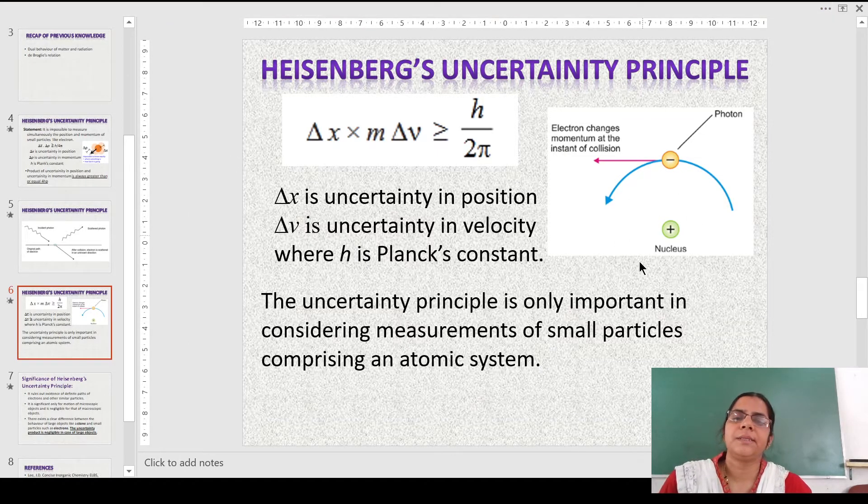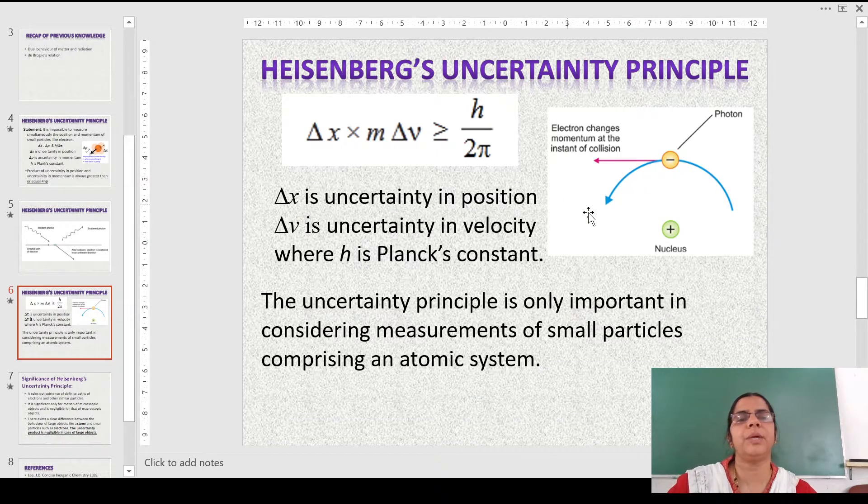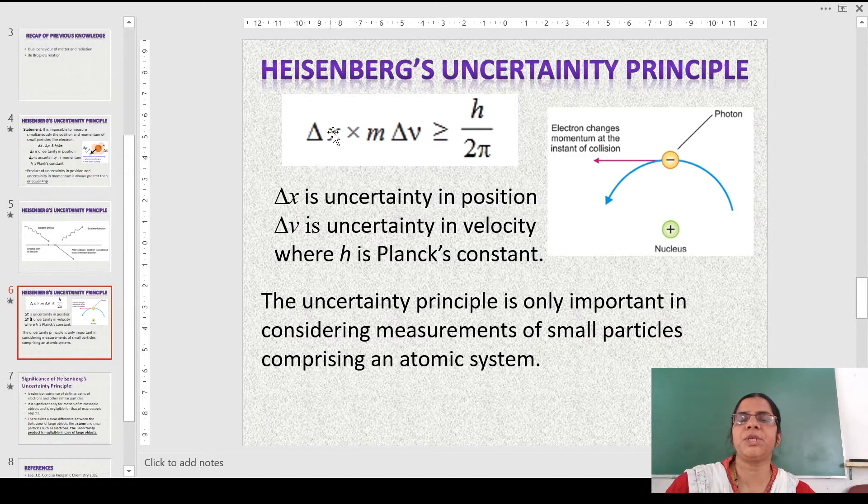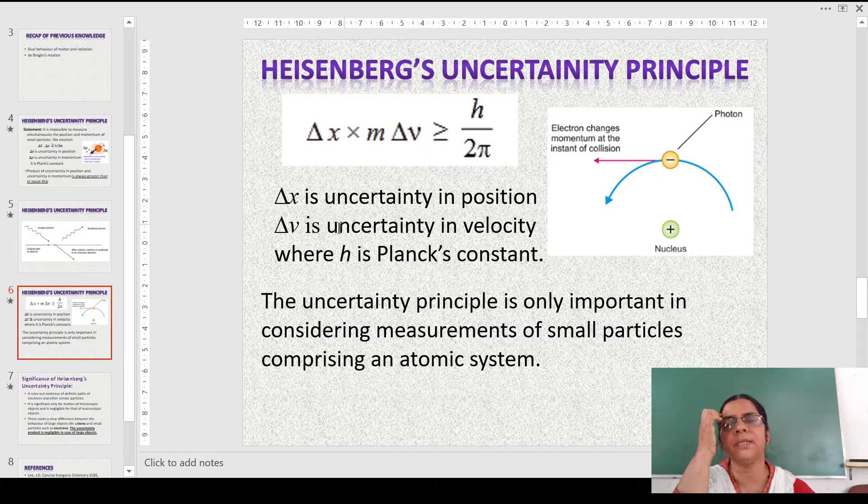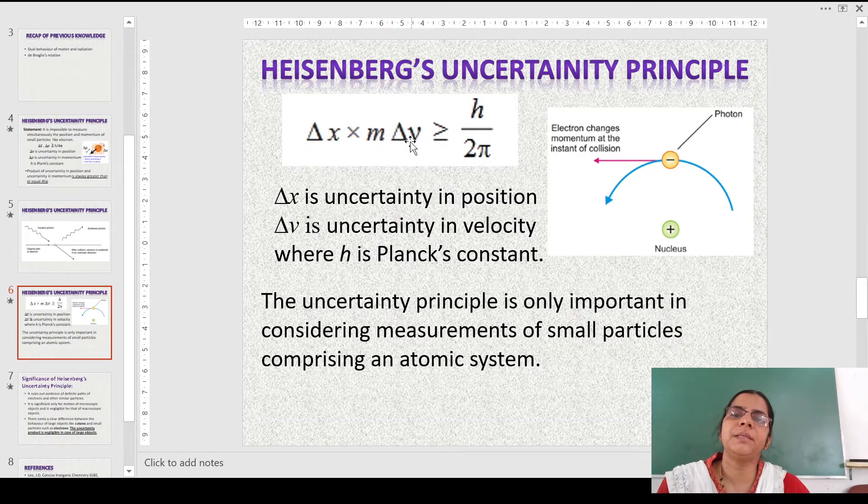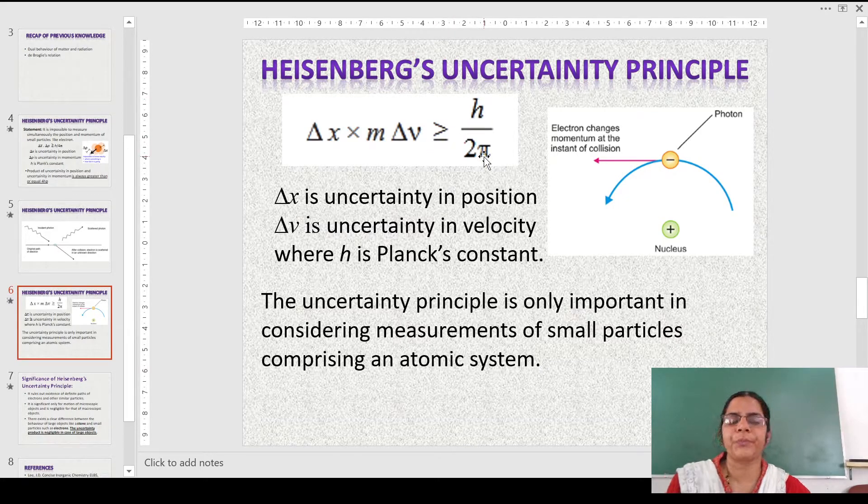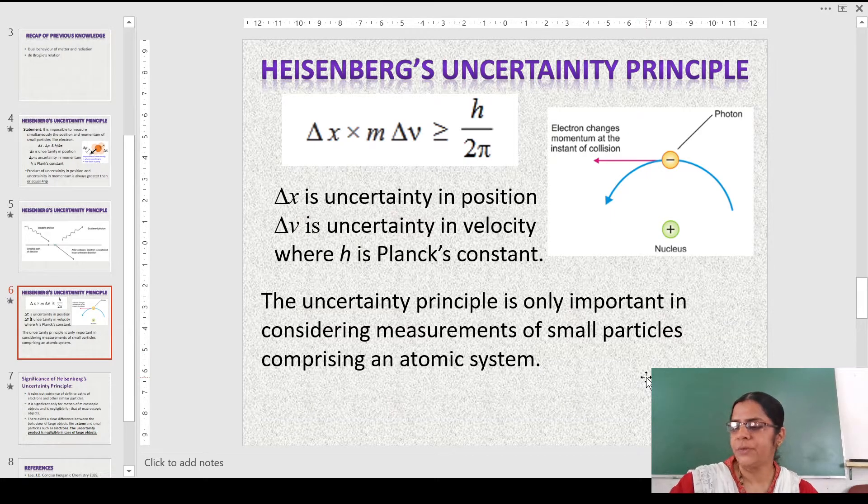Once again, in this slide, I have shown an electron. Now let us come to the physical concept of this uncertainty principle. We know that this is the expression given by Heisenberg, wherein he says Δx is the uncertainty in the position and Δv is the uncertainty in velocity. Now we have replaced the momentum by m × Δv. Since the mass remains the same, there is uncertainty in velocity here. We know that the product of the position and velocity is always greater than or equal to h/2π. Let us come to the physical significance or physical concept of this uncertainty principle.